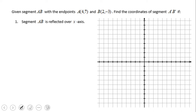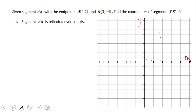The first example talks about reflecting segment AB with given coordinates over the x-axis. Let's take the first point, 4 and 7, which you can see plotted here. We need to reflect it over the x-axis, so let me count how far away it is from the x-axis: 1, 2, 3, 4, 5, 6, 7.